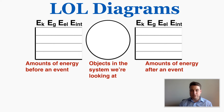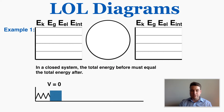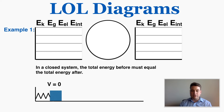When considering a system we have to consider which objects are part of our energy system. In a closed energy system the total energy has to be the same before and after, so when adding up the total amount of energy in these LOL diagrams we have to make it the same.